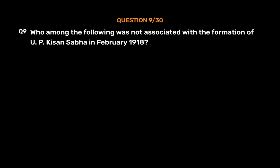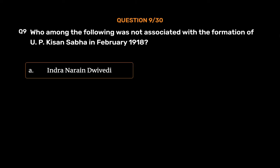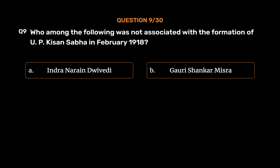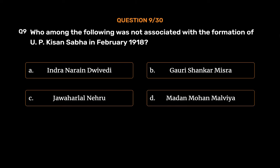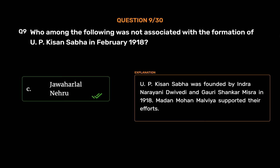Question No. 9. Who among the following was not associated with the formation of U.P. Kisan Sabha in February 1918? Option A, Indranar Indhvivedi; Option B, Gauri Shankar Mishra. The correct answer is Option C, Jawaharlal Nehru. U.P. Kisan Sabha was founded by Indranar Indhvivedi and Gauri Shankar Mishra in 1918. Madhan Mohan Malviya supported their efforts.